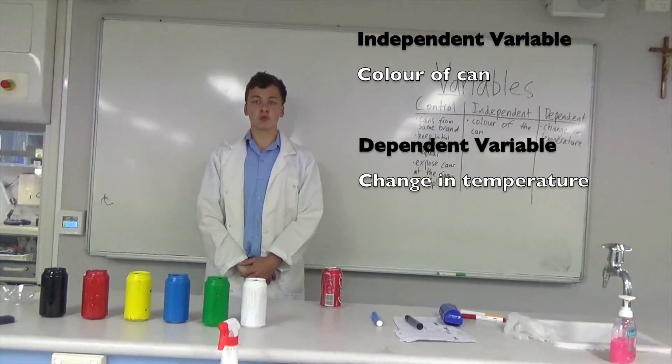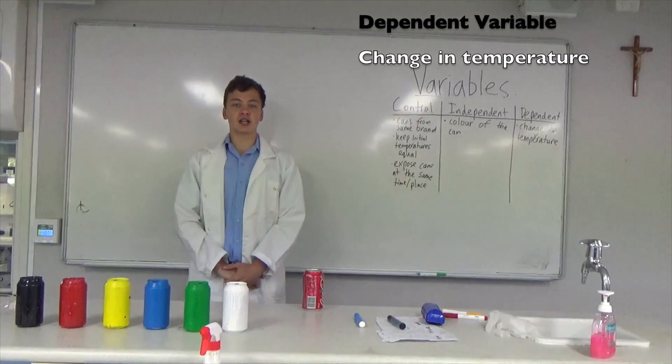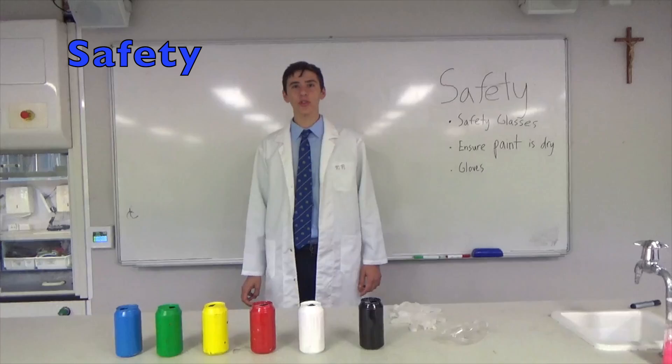The independent variable will be the color of the can. The dependent variable will be the unique change in temperature that results from this change in color.